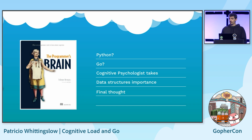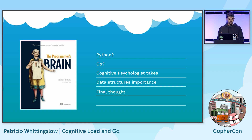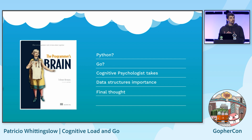My knowledge on this topic comes from Felina Hermann's book, The Programmer's Brain. We'll start by looking at the simplicity of Python to understand these concepts — a language often touted as being simple and the best for teaching. Then we'll look at how Go stacks up, and we'll look at what people in the field say about this.